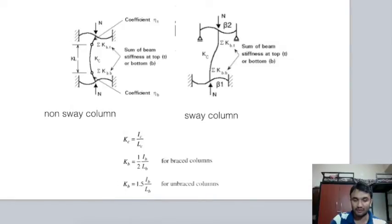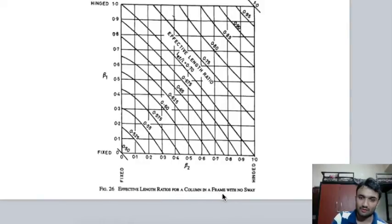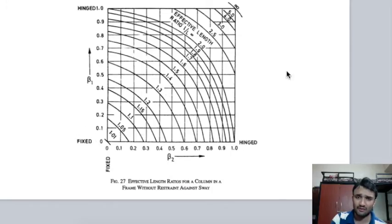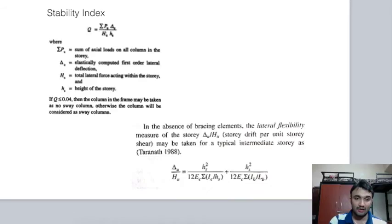Two figures are given in IS 456: one for the effective length ratio of a column in a frame with no sway (braced column), and another for a column in a frame without restraint against sway (sway column). The stability index is the first step in deciding whether a column is sway or not. From the appropriate chart, take β1 and β2, find k, and multiply by the column length to get the effective length.